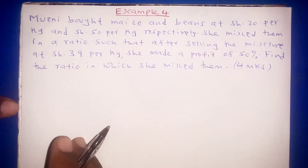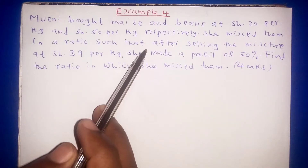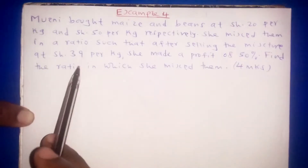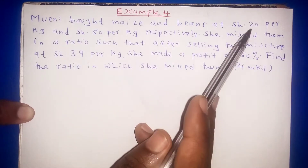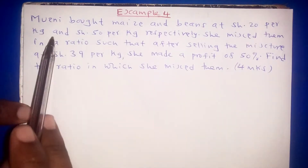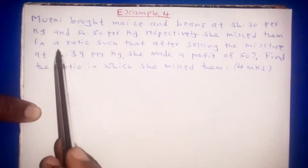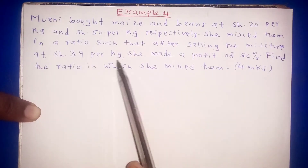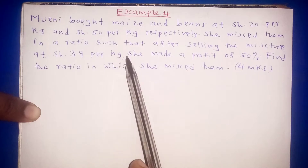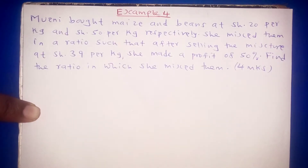Hello everyone and welcome to our fourth and last lesson on mixtures. We want to tackle this question: Mweni bought maize and beans at 120 and 50 shillings per kg respectively, then she mixed them in a ratio such that after selling the mixture at 39 shillings per kg she made a profit of 50 percent. We are required to find the ratio in which she mixed them.